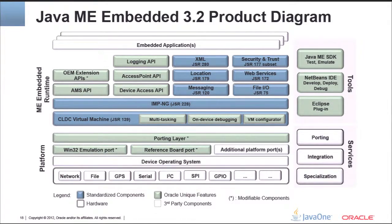At the core from a Java perspective, you have the CLDC virtual machine — what we've been using in the mobile space for years, enhanced with multitasking support, full headless on-device debugging, and a VM configuration feature. The profile we're currently using is IMPNG — Information Module Profile Next Generation. If you're familiar with MIDP2, IMPNG is essentially MIDP2 without the graphics. It provides you an application model, a set of APIs, and connectivity — a pretty nice application environment perfectly targeted to this kind of platform.